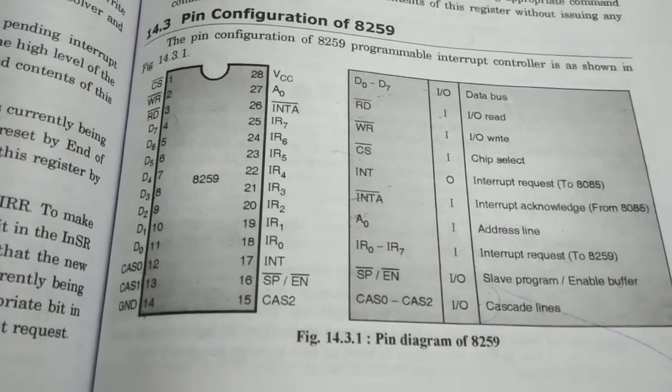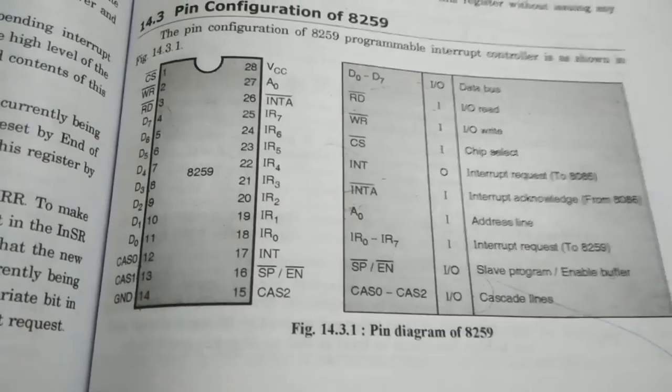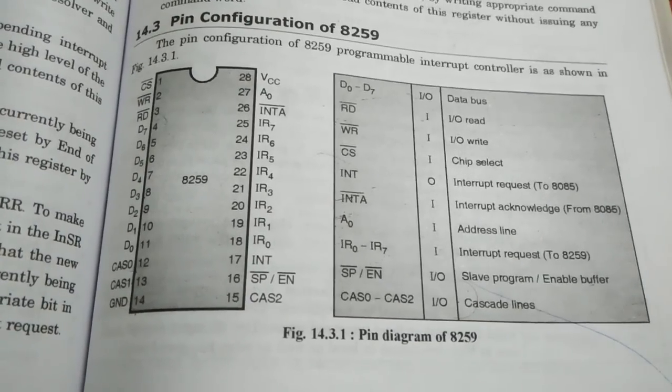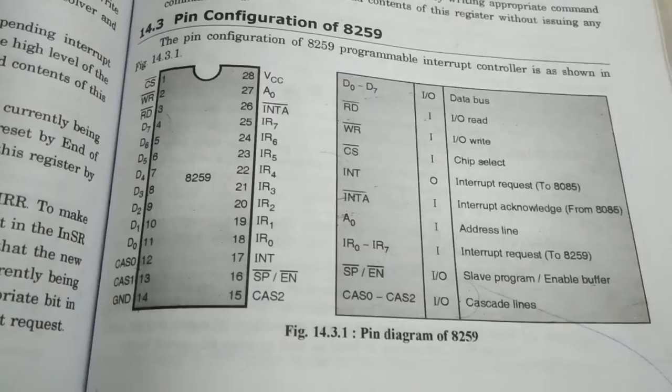Hi friends, this is the pin diagram of 8259, which is a programmable interrupt controller. So I'm going to tell you a small story which helps you to memorize